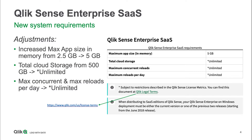To give you one example of what that fair use policy means: we do say if you run more than 100 concurrent reloads, performance may be degraded. That's something you will find within those terms. This gives our customers and everyone who's using the SaaS platform a way more capacity to use.